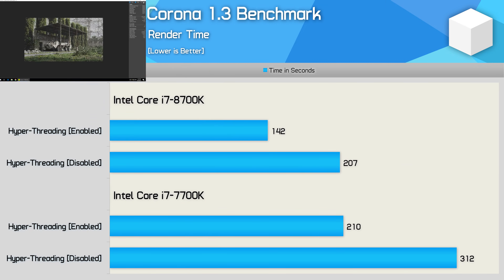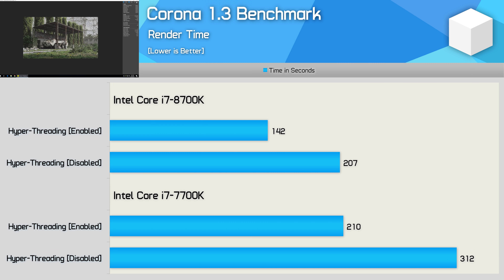The second last application benchmark is Corona, and here the 8700K saw a 31% performance decrease with hyperthreading disabled, while the 7700K saw a similar 33% drop-off. Both were obviously significant performance decreases, so depending on how much these updates impact hyperthreading performance, we could see some pretty big performance drop-offs in rendering and encoding workloads.